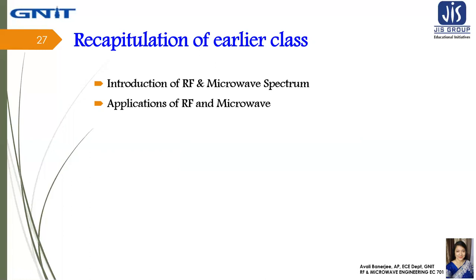The electromagnetic spectrum consists of the entire range of electromagnetic radiation. It is broadly classified into the following classes: gamma radiation, x-ray radiation, ultraviolet radiation, visible light, infrared radiation, microwave radiation, and radio waves. The frequency range of RF and Microwave is 300 MHz to 300 GHz, and the wavelength ranges from 1 mm to 1 m.